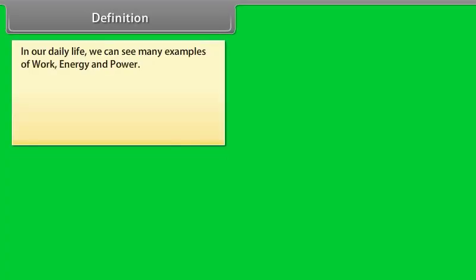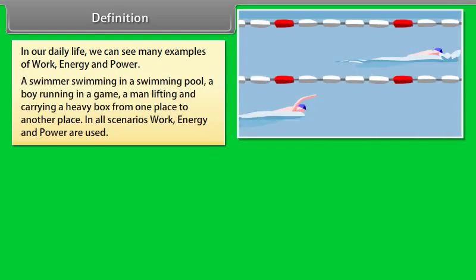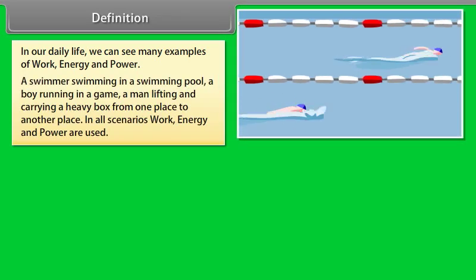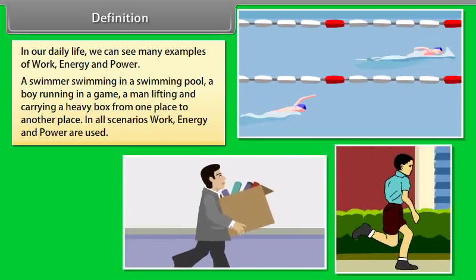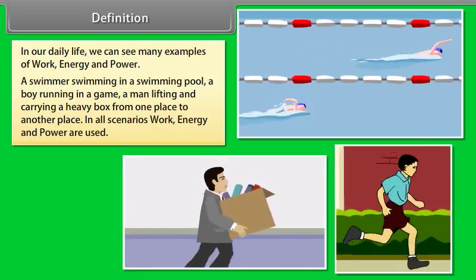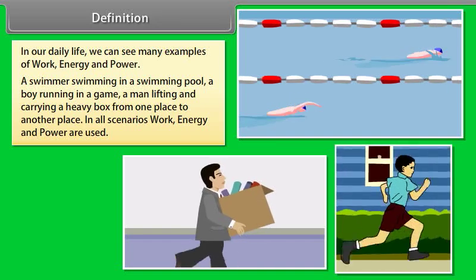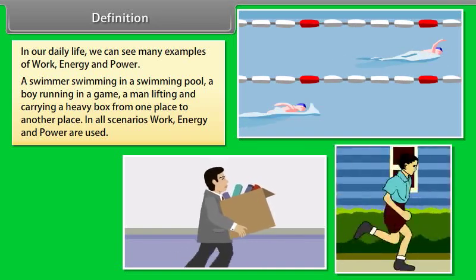Definition. In our daily life, we can see many examples of work, energy and power. A swimmer swimming in a swimming pool, a boy running in a game, a man lifting and carrying a heavy box from one place to another place. In all scenarios, work, energy and power are used.